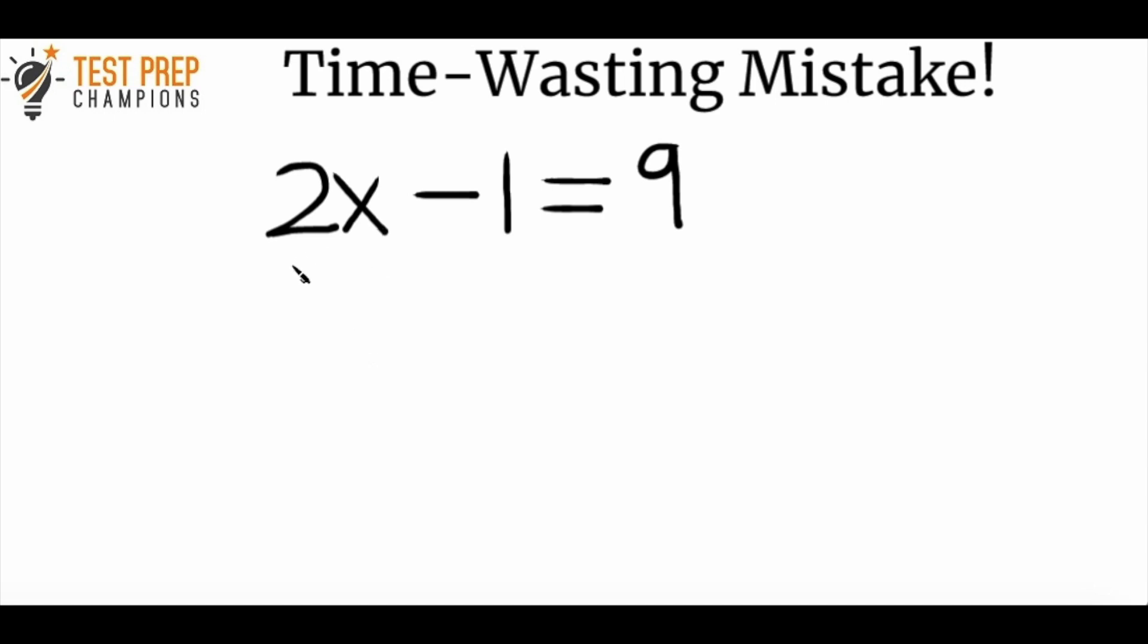I have here a basic example of an algebra type question where you'd have to solve for x. If I asked you to solve a question like this for x, hopefully you'd know how to do it. But if not, basically when I say solve this equation for x, what I mean is you want to get the x by itself on one side of the equation. So the way that you would do it is you would first add one to both sides of the equation, and that would give us 2x equals 10.